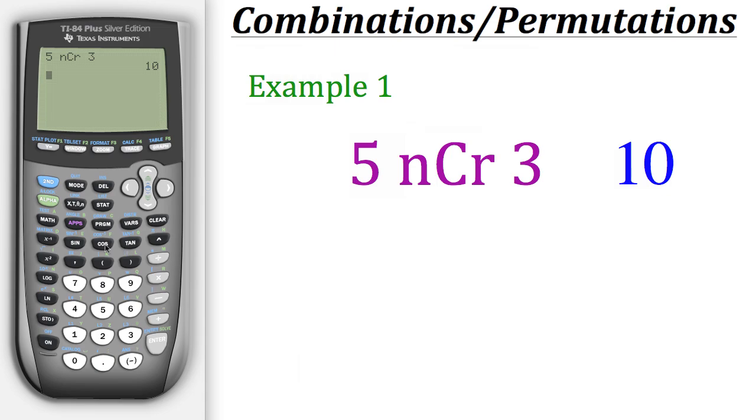Now let's take a look at one more example. This time we have a permutation and like with the last example we have a total of five items of which we only want three.